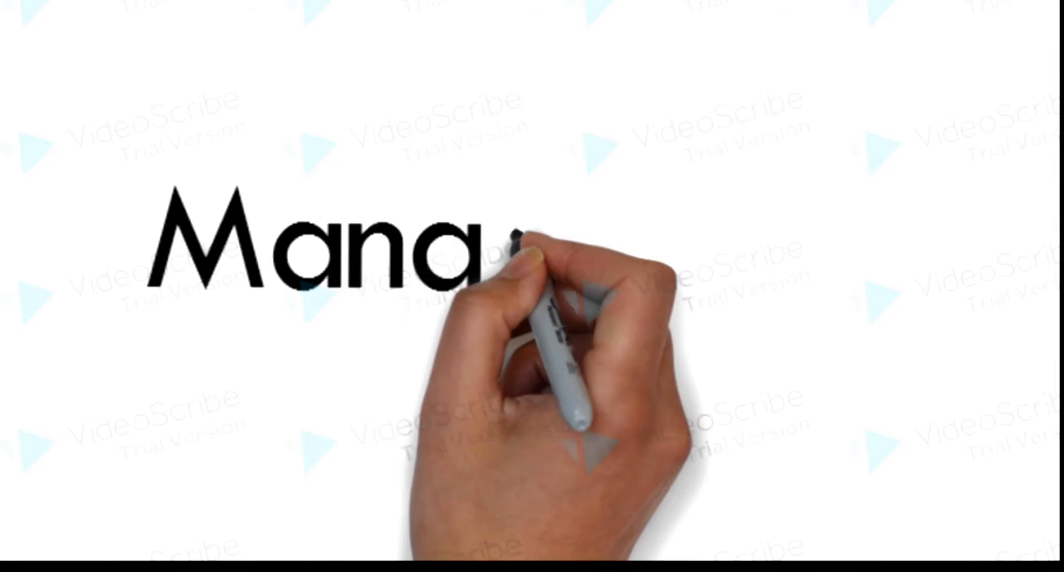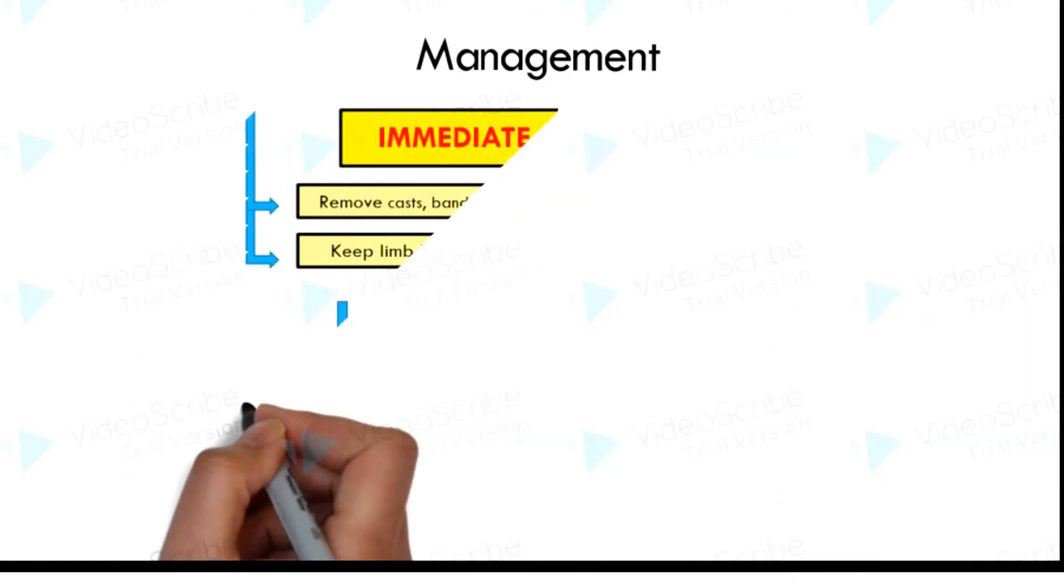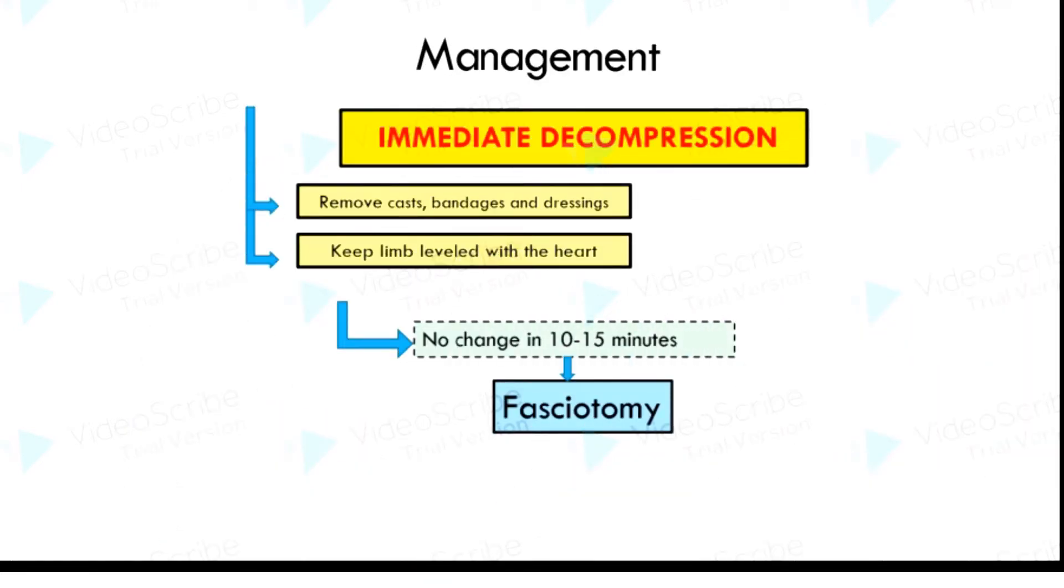Management: Threatened compartments should be immediately decompressed. Casts, bandages, and dressings must be completely removed. The limb should be kept flat as elevating the limb causes a further decrease in end capillary pressure and worsens the muscle ischemia. If there is no change within 10 to 15 minutes, an open fasciotomy should be performed. The wounds should be left open and inspected two days later.